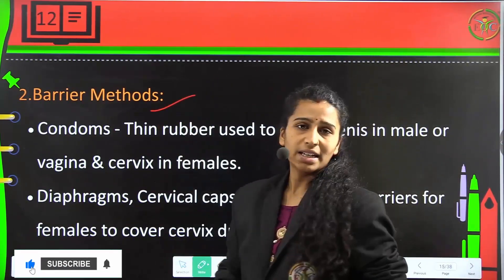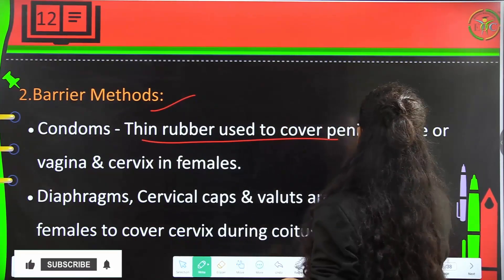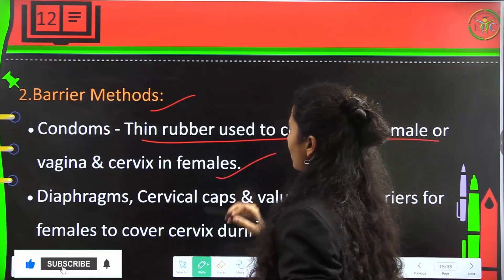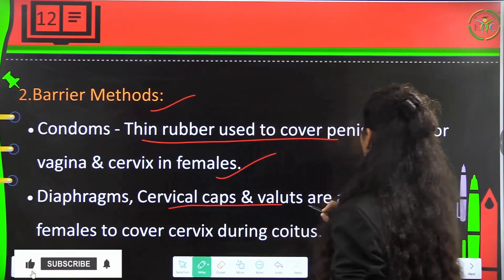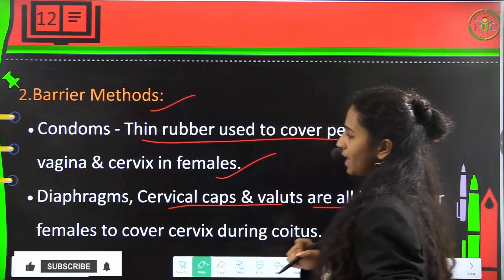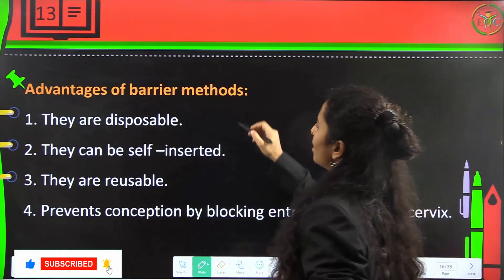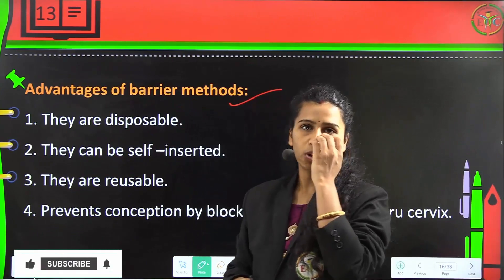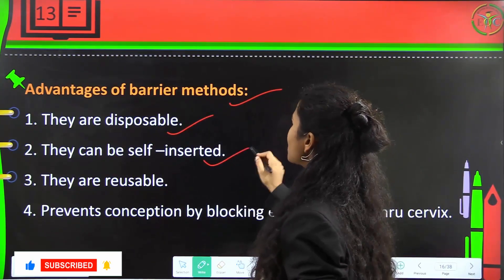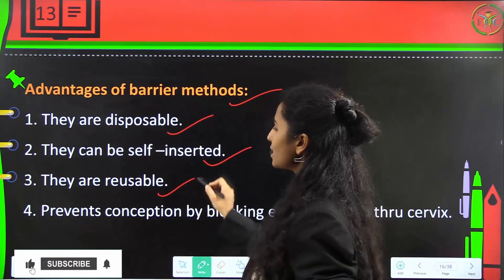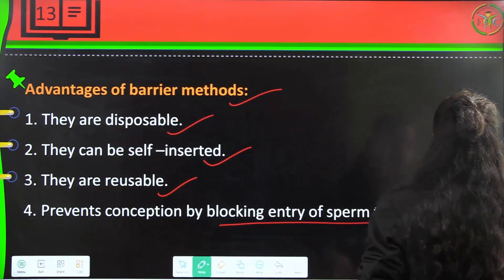Barrier methods include usage of condoms, which are thin rubber sheaths used to cover the penis of the male or the vagina and cervix of females. Diaphragms, cervical caps, and vaults are female barriers used to cover the cervix during coitus. Advantages of barriers are that they are disposable, can be self-inserted, are reusable, and prevent conception by blocking the entry of sperms through the cervix.